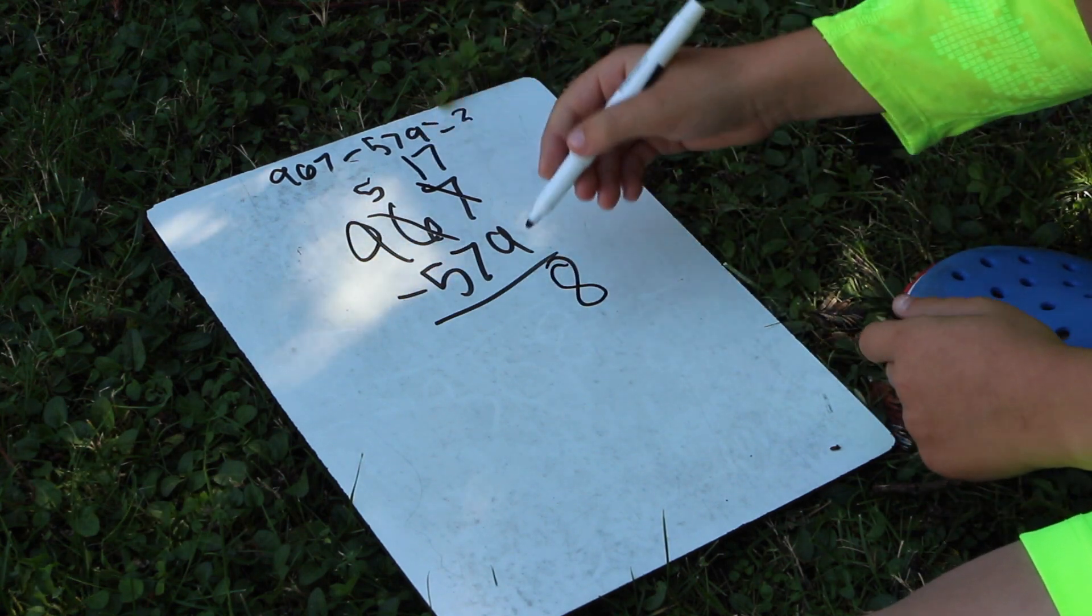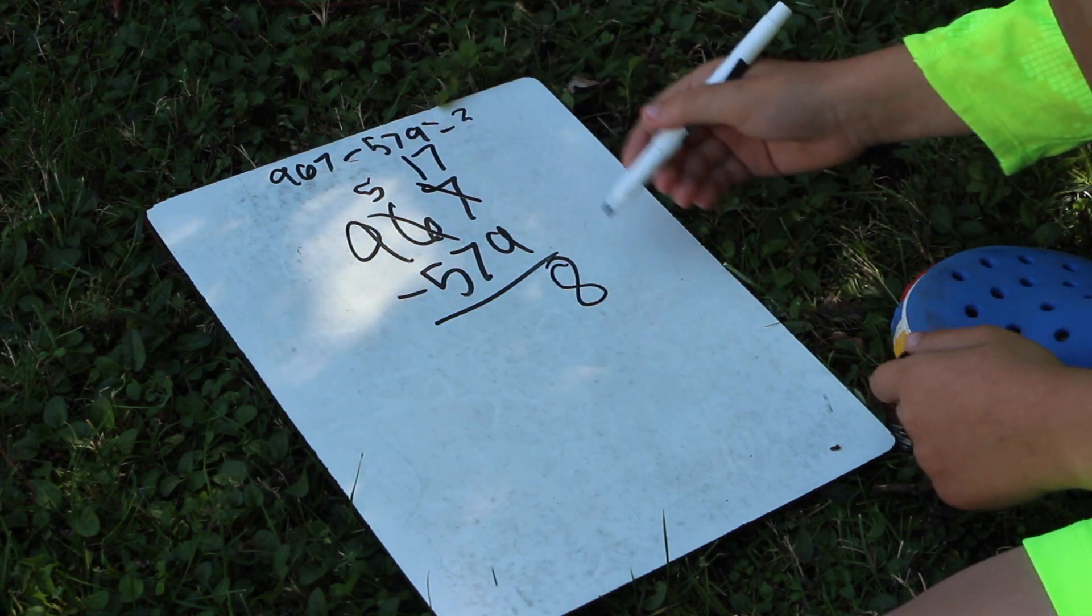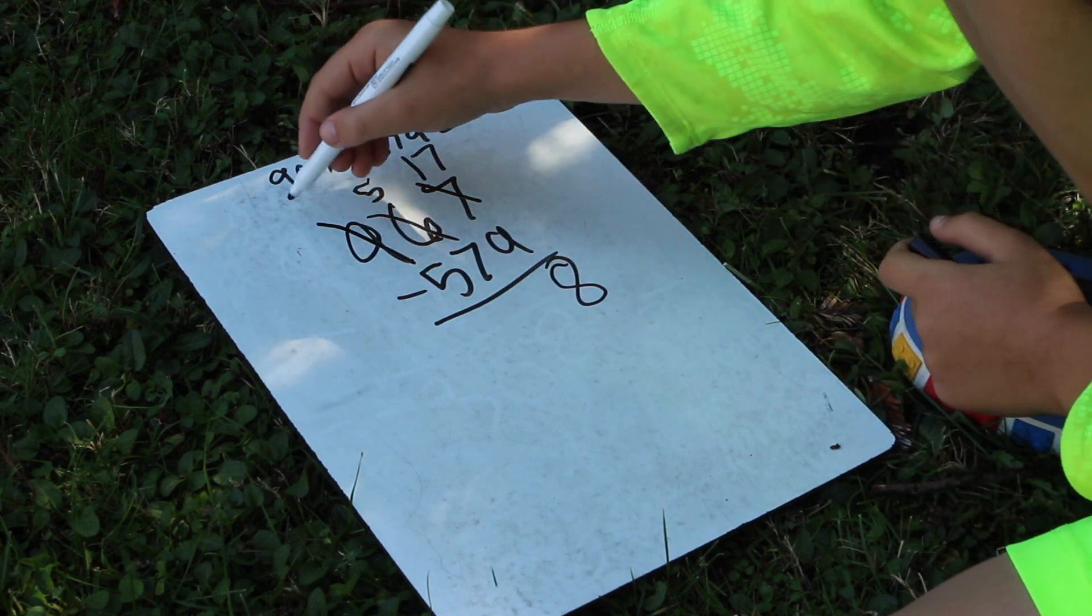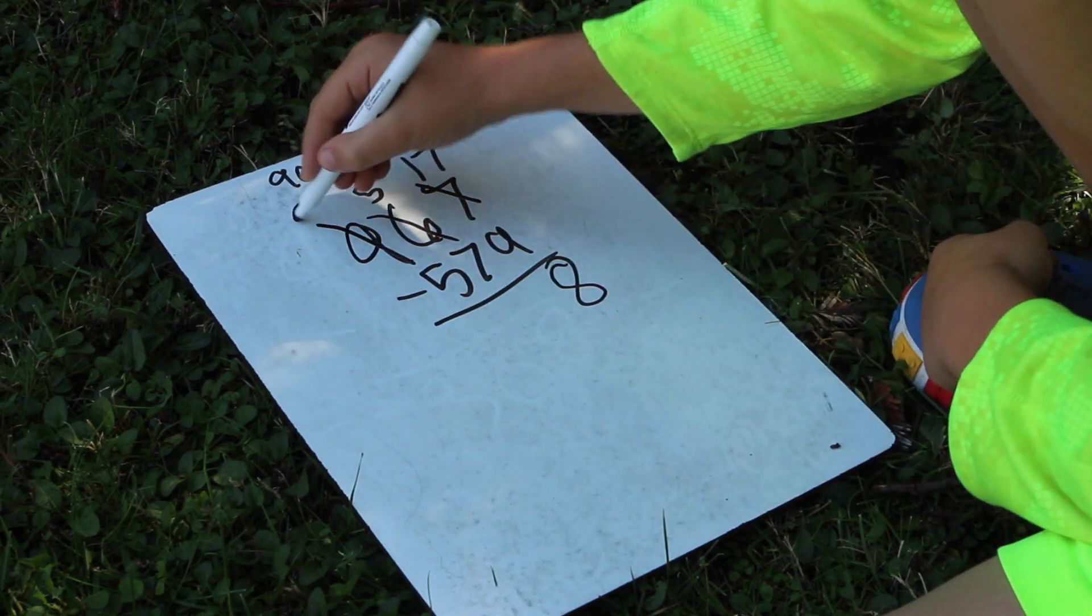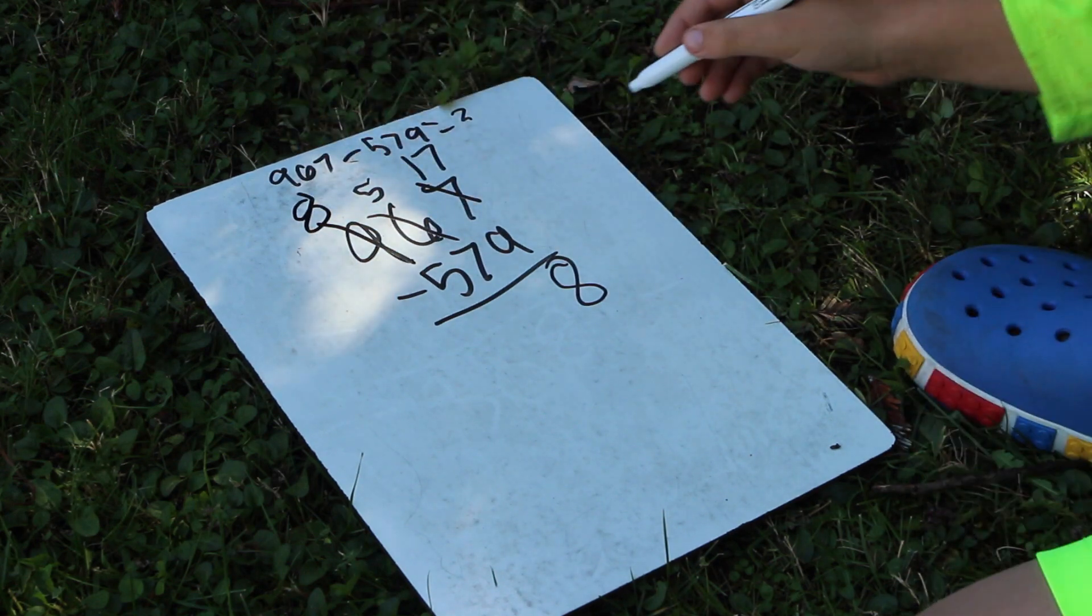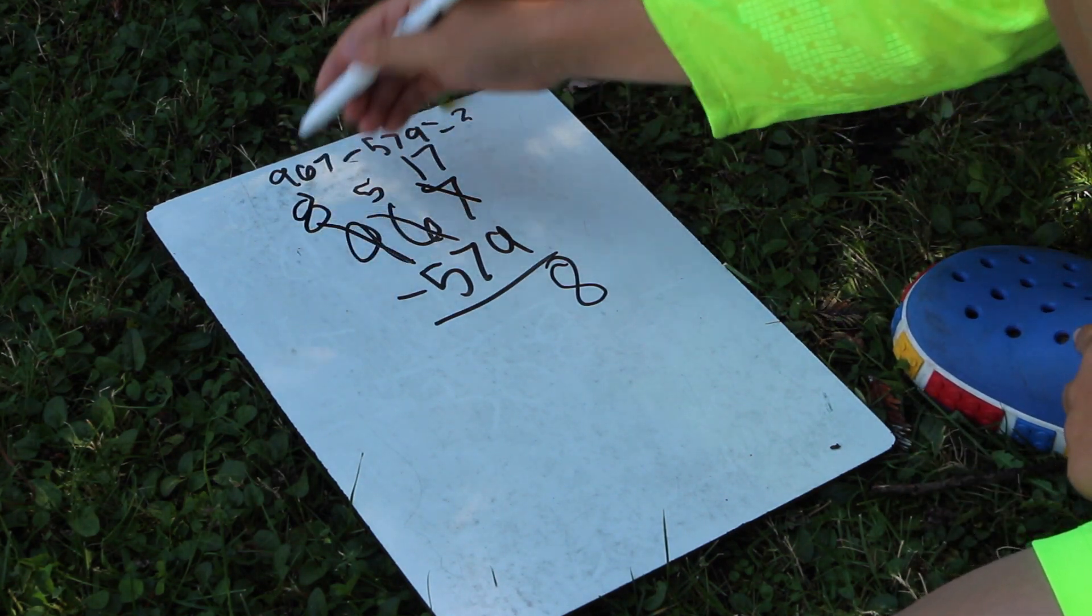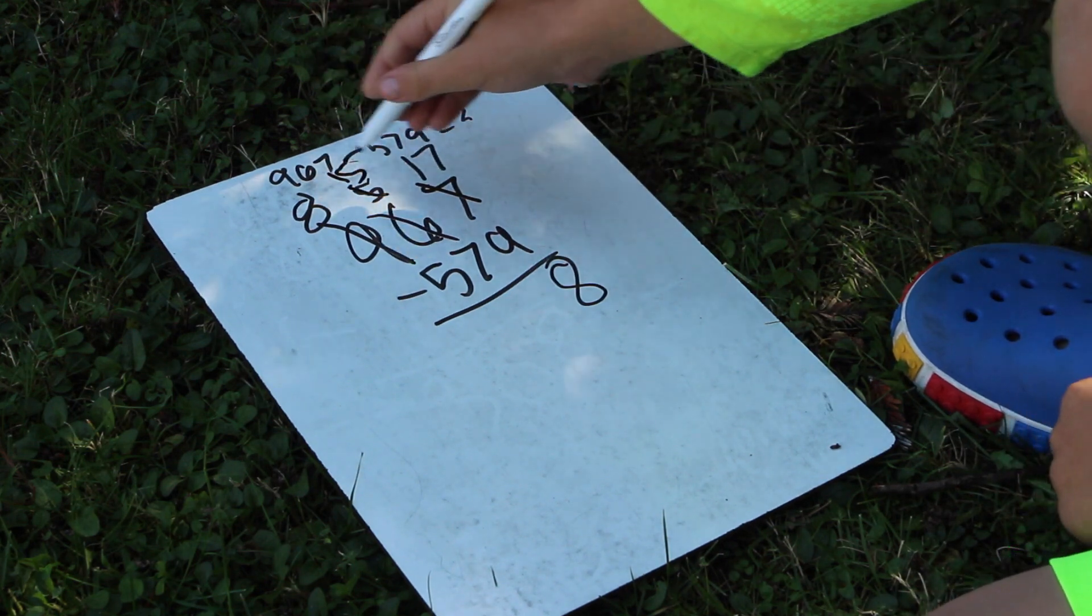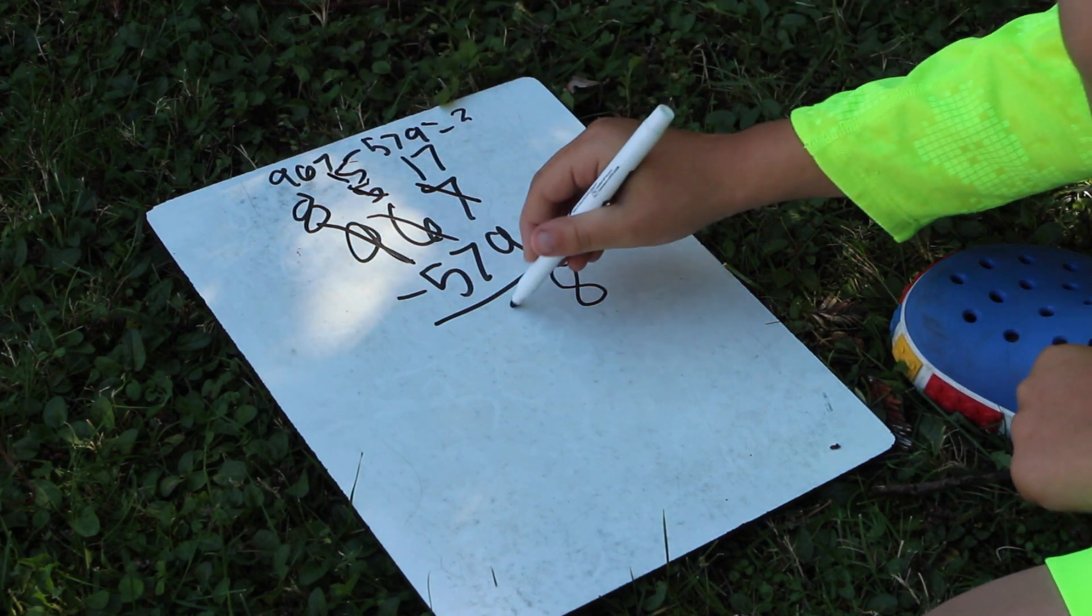Now 5 minus 7 would be the same thing as this. So we borrow 100 from the 9, make this an 8, and this 15. And then 15 minus 7 is 8 too.